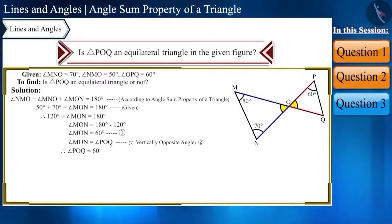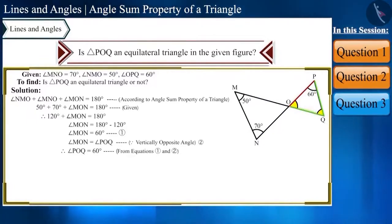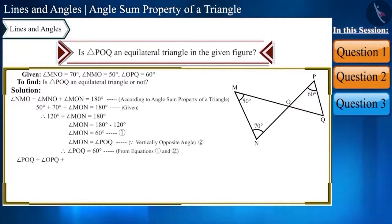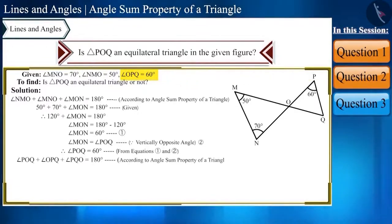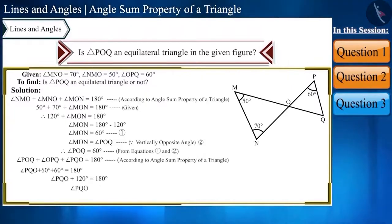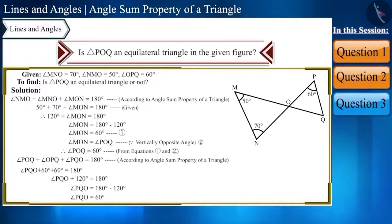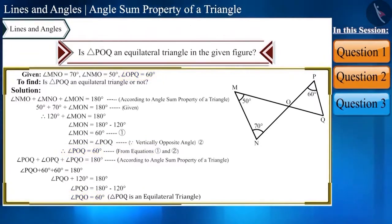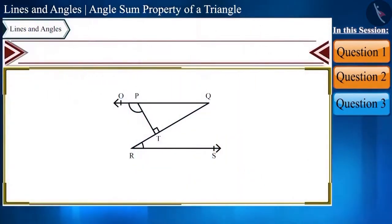Since angle POQ, angle OPQ, and angle PQO are angles of the same triangle, angle POQ plus angle OPQ plus angle PQO equals 180 degrees. We are given angle OPQ and have found angle POQ, so putting both values in gives angle PQO equals 60 degrees. All angles of triangle POQ are 60 degrees, confirming it is an equilateral triangle.